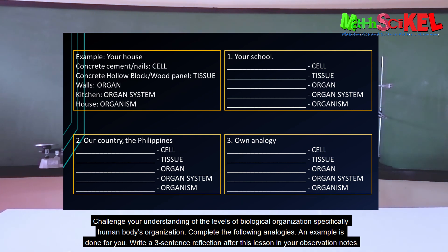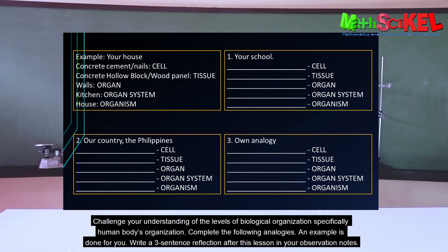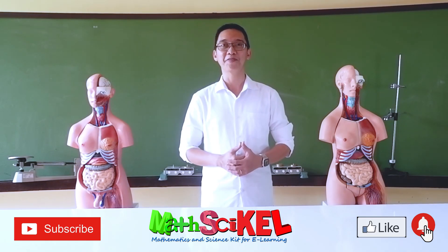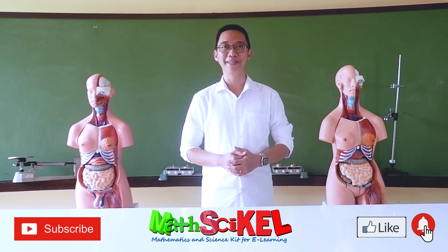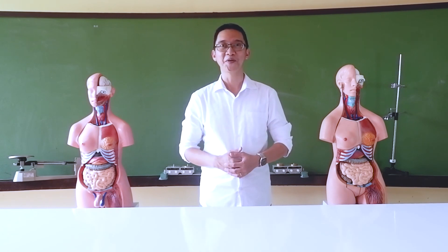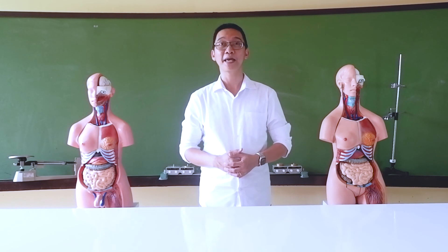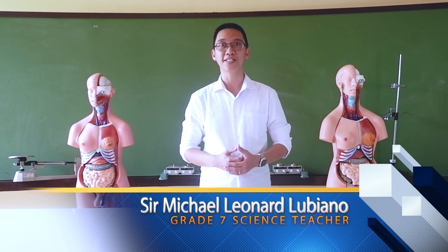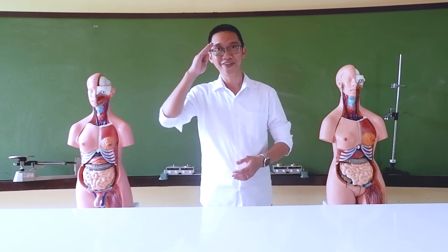Write a three-sentence reflection after this lesson in your observation notes. Please do not forget to subscribe to our YouTube channel, OneCycle, to like the videos, and hit the bell button for updates. I hope you learned something in today's lesson. In the next episode, we will differentiate plant and animal cells based on the presence or absence of certain organelles. This is Sir Lennar Gutiérno, your science tutor. See you all next time.